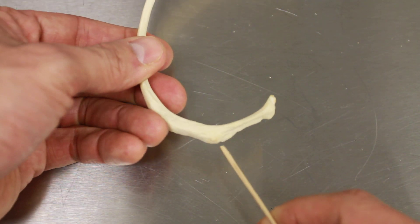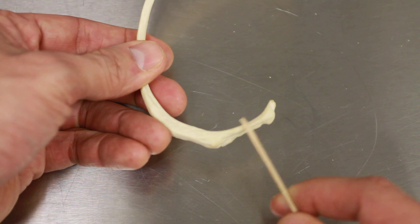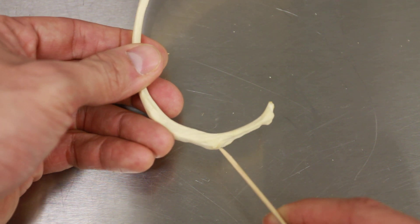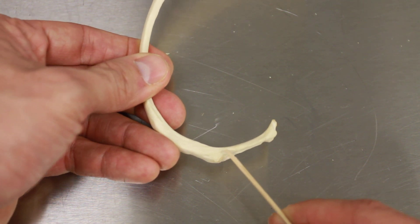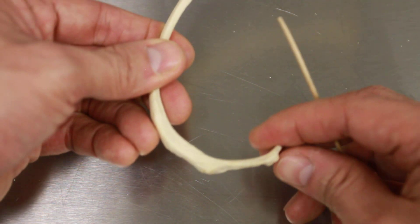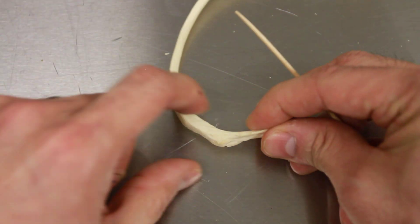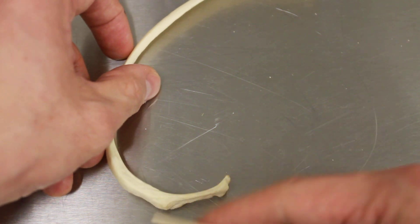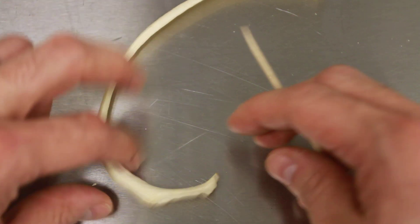Then we have the tubercle of the rib. So if we have the head, the neck leads up to this big bump that's called the tubercle of the rib, which attaches to the transverse process. So far we have the head, the neck, and the tubercle. These are always posterior.